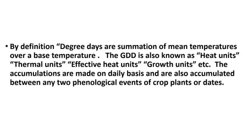From date of sowing to the beginning of the reproductive phase, we call it the vegetative phase. Once the seed is sown in the crop field, germination and emergence occur, completing the vegetative phase — generally around 35 days in tropical regions. Each day, maximum and minimum temperatures are taken, averaged, and the base temperature is deducted: T_max plus T_min divided by 2, minus T_base.